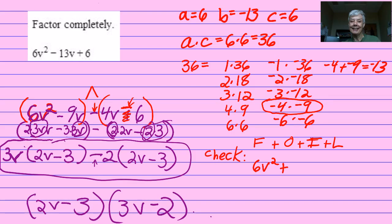Plus outside, which is 2V times negative 2, which is negative 4V. Plus inside, which is negative 3 times positive 3V. That will be negative 9V. And last will be negative 3 times negative 2, which is positive 6.